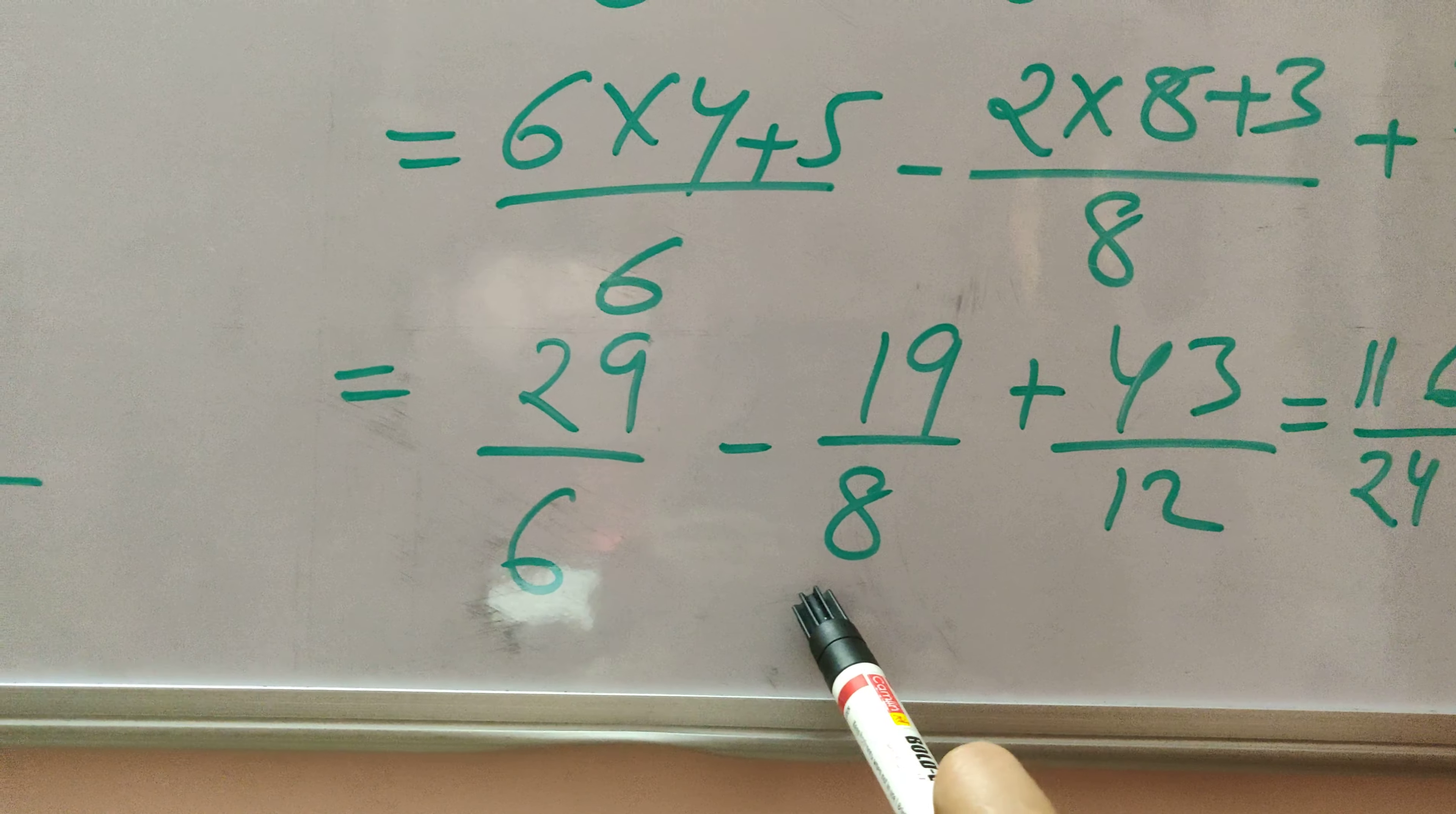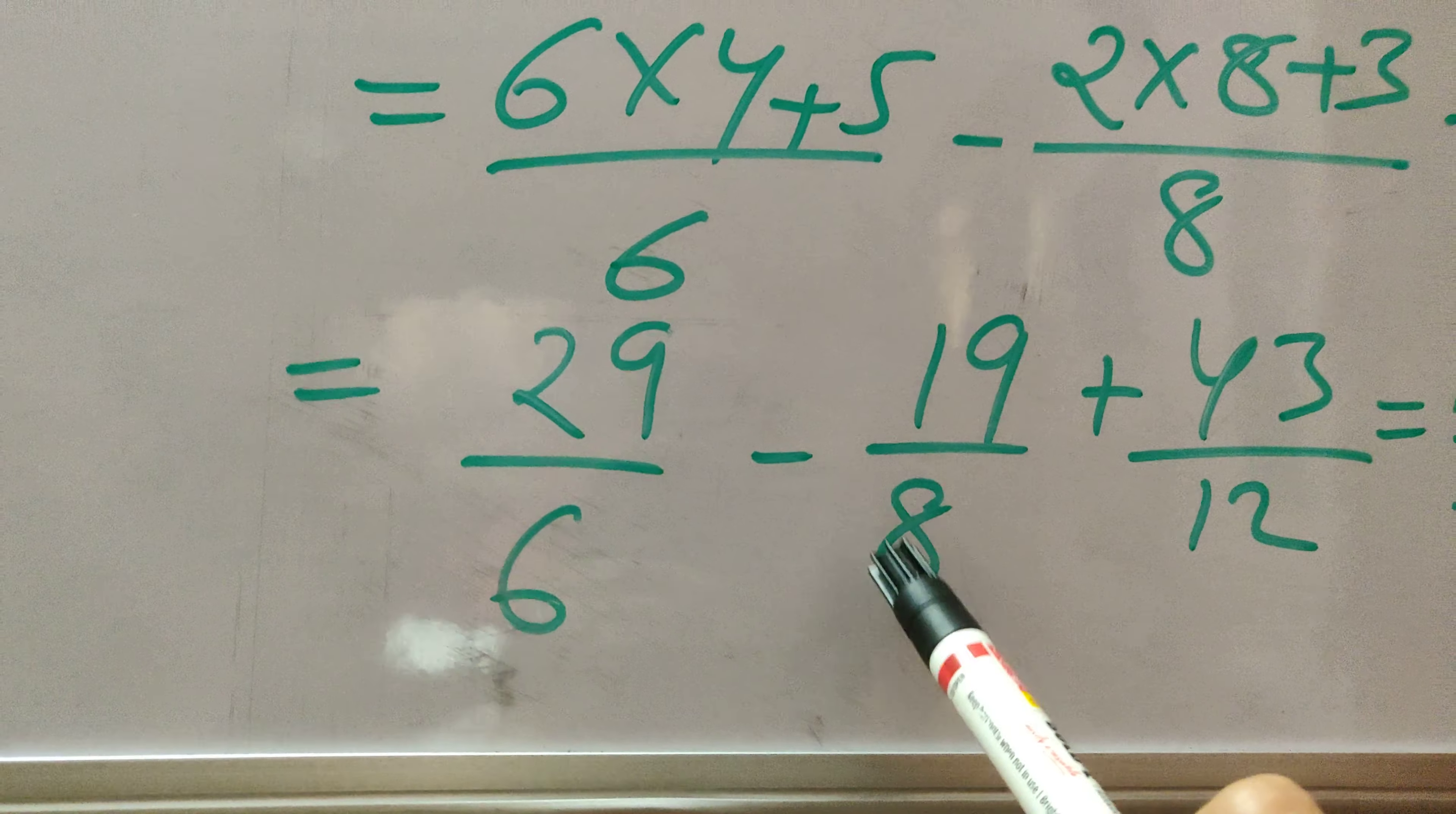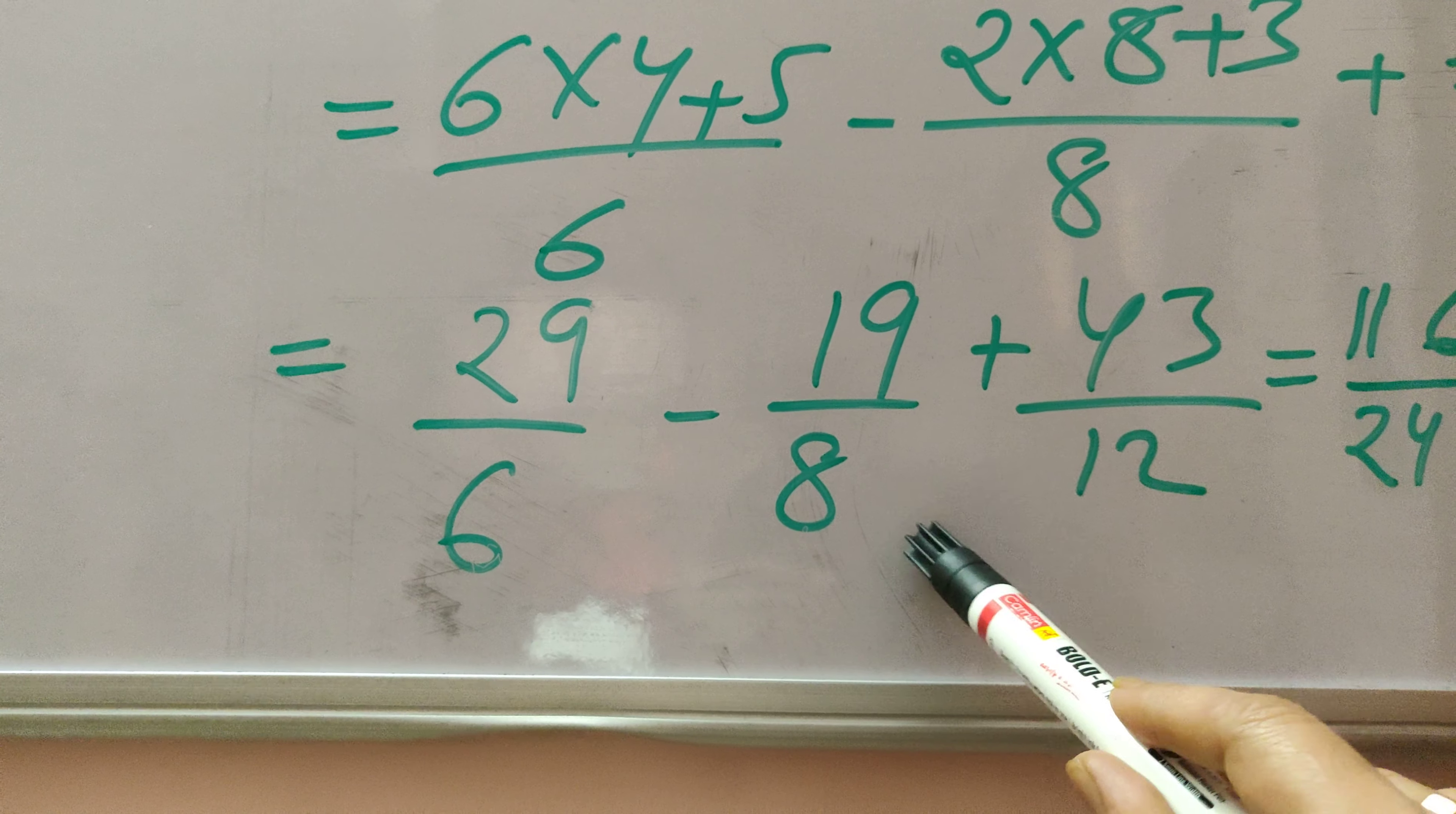We have to do just like we studied the method for addition of two fractions with uncommon denominators. We have to do a similar method here. So you see we have to take LCM of 6, 8, and 12.